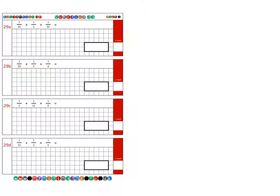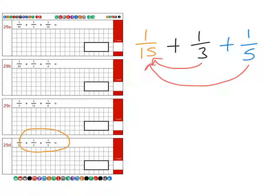And for the final question, which is question 29D, the first fraction is 1/15. We're going to add that to 1/3 and then finally add 1/5. And again, we can see how the denominators are related to each other. So that's because the 3 fits into 15 and the 5 also fits into 15. So 15 is our common denominator.